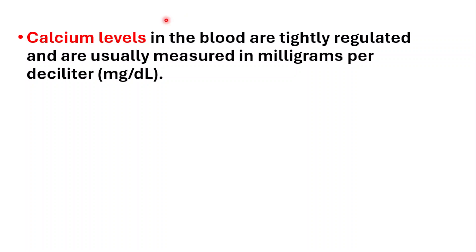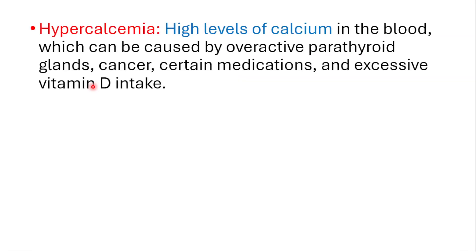Calcium levels in the blood are tightly regulated and are usually measured in milligrams per deciliter. We have hypercalcemia, which is high levels of calcium — we have a video on signs of high calcium in the blood, which can be caused by overactive parathyroid glands, cancer, certain medications, and excessive vitamin D intake.